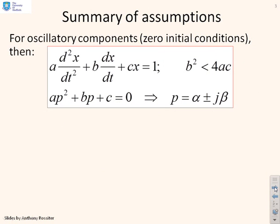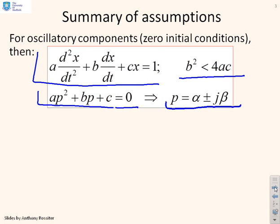How do we ensure that we have sinusoids in the solution? Well, I've rewritten the differential equation there so you can see what it is. Now if you force b² to be less than 4ac, then you can show that the roots of the characteristic equation, which is ap² + bp + c = 0, are complex. You'll see here the roots are given as p = α ± jβ. So as long as b² is less than 4ac, then the characteristic equation will have complex roots. And therefore, this system, represented by a second-order ODE, will have an oscillatory component in the solution.